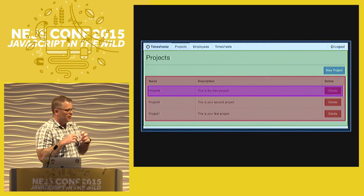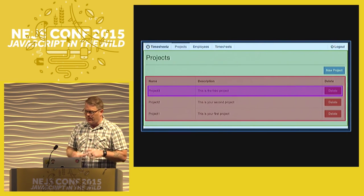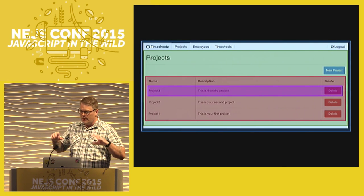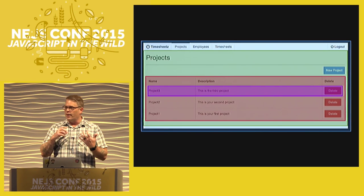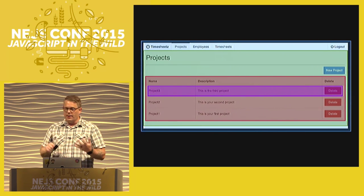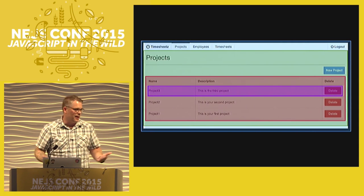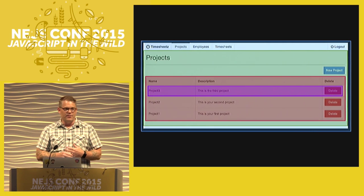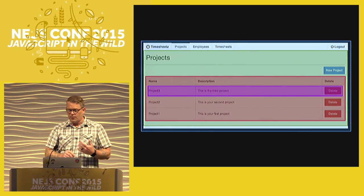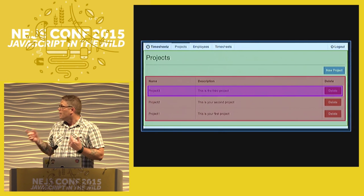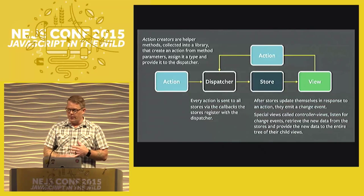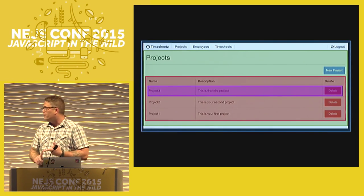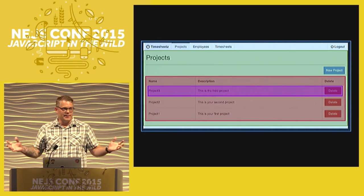For me it's easier to see it by looking at an application broken into different components. The blue line is your entire application. The green part is your main component - they call them controller components - which registers for changes on your store. Within that component we have a table component and the table has row components. If you click the delete button in the row, you're not talking directly to the store or business logic - all it does is fire an event to the dispatcher. This means the table and row components can be completely separate and autonomous.